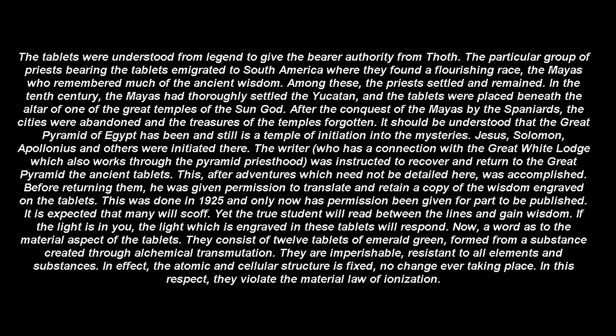It is expected that many will scoff. Yet the true student will read between the lines and gain wisdom. If the light is in you, the light which is engraved in these tablets will respond. Now, a word as to the material aspects of the tablets. They consist of 12 tablets of emerald green, formed from a substance created through alchemical transmutation. They are imperishable, resistant to all elements and substances. In effect, the atomic and cellular structure is fixed, no change ever taking place. In this respect, they violate the material law of ionization. Upon them were engraved characters in the ancient Atlantian language — characters which respond to attuned thought waves, releasing the associated mental vibration in the mind of the reader. The tablets are fastened together with hoops of golden colored alloy suspended from a rod of the same material.